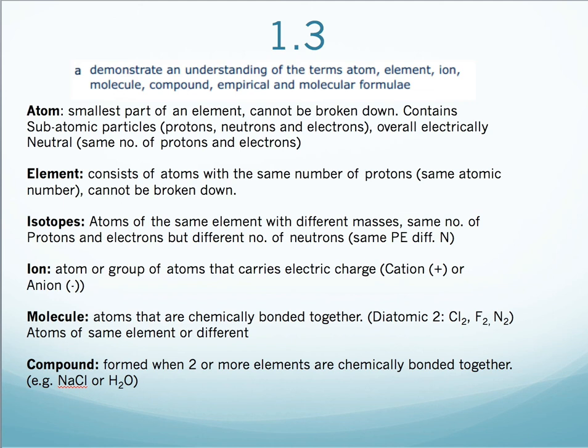Let's just quickly review some of the terms we used so far and link this back to the specification. On the specification under 1.3a, it's asking us to look at these terms and make sure we're familiar with them. We've already discussed atoms. It's the smallest part of an element. It cannot be broken down. Well, it can be with nuclear fission, but generally, it cannot be broken down. It contains subatomic particles, including protons, neutrons, and electrons. Atoms, overall, they are electrically neutral as there is the same number of protons and electrons. Electrons are negative and protons are positive. Therefore, overall, it's neutral because the protons and electrons cancel each other out. An element consists of atoms with the same number of protons. It has the same atomic number. And again, you cannot break it down.